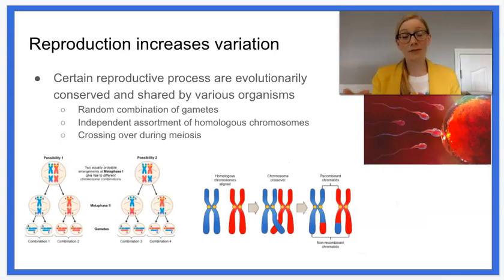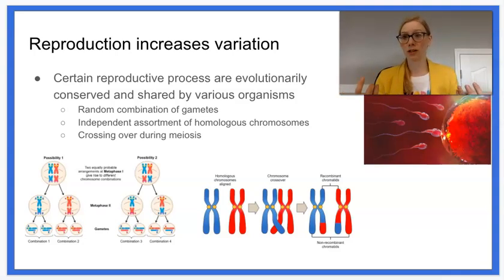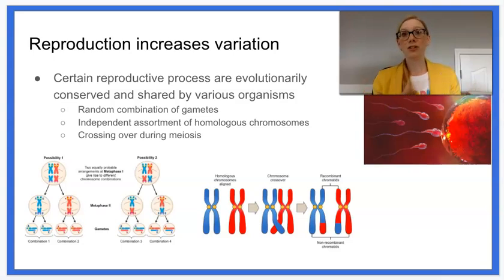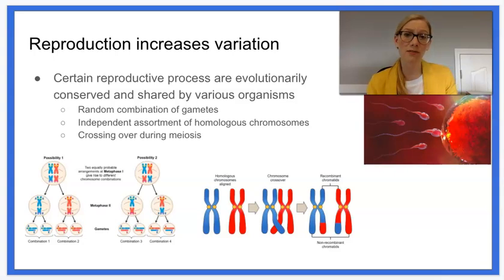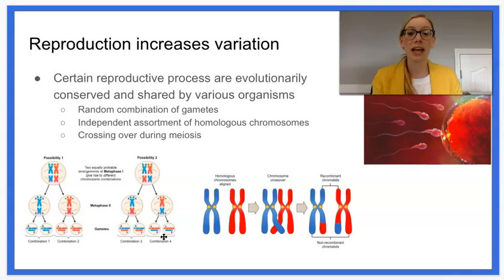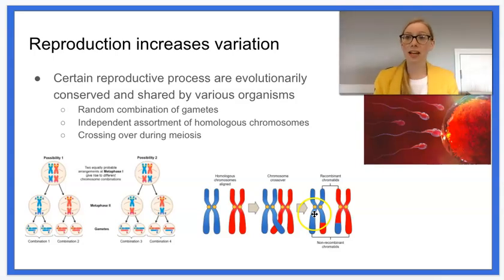The last thing I want to talk about is another way we increase variation: through sexual reproduction. We said the whole point of sexual reproduction was to create variation. Certain reproductive processes are evolutionarily conserved across different organisms in order to do this. We know about the random combination of gametes — which egg and which sperm meet — and that's random, so that increases variation. Independent assortment of homologous chromosomes determines what order and what chromosomes you inherit, again adding variety. And then crossing over, or mixing up of genes during meiosis, also provides that variety. That variety can produce different phenotypes, and those different phenotypes can be selected upon differently based upon the environment.